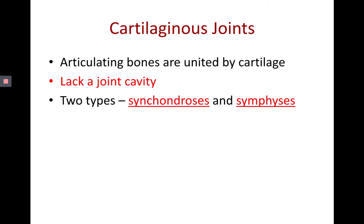Next let's move on to cartilaginous joints, which still have no joint cavity. The two articulating bones of a cartilaginous joint are going to be united by cartilage — either hyaline cartilage or fibrocartilage. So there are two types of cartilaginous joints.